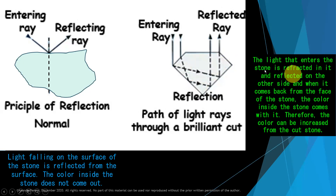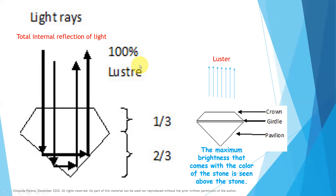The light that enters the stone is refracted inside and reflected on the other side. When it comes back through the face of the stone, the color inside the stone comes with it. Therefore, the color can be enhanced from the cut stone. This is the difference between a rough stone and a faceted stone. When the light rays enter from the table of the stone, this faceted stone's pavilion reflects here and the other side reflects through the table.